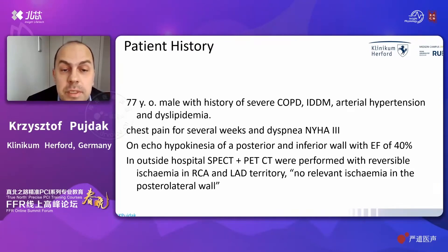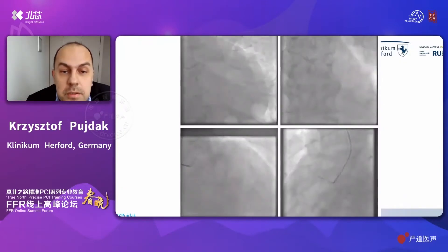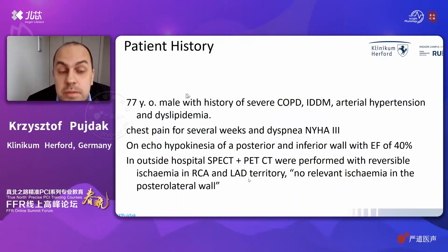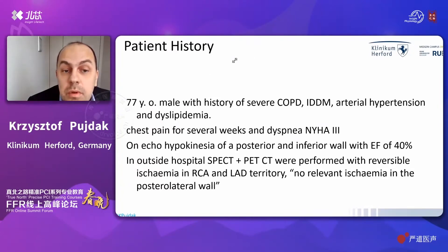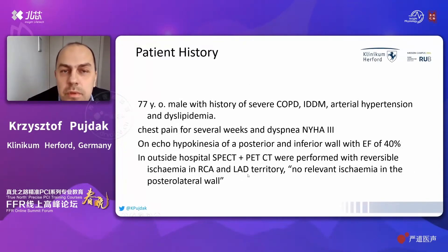Echo revealed hypokinesia of the posterior and inferior wall and an ejection fraction of 40%. An outside hospital referred the patient to us where non-invasive imaging had been performed, showing reversible ischemia in the territories of the right coronary artery and LAD, with no relevant ischemia of the posterolateral wall — which will turn out to be quite important in the further course.